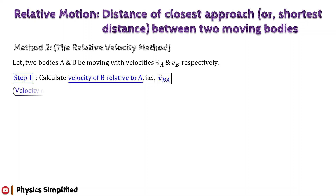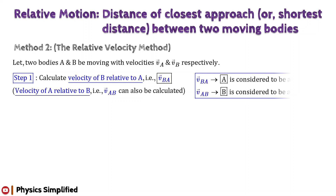Remember, you can also calculate the velocity of A relative to B, that is vector v_AB. It must be noted that vector v_BA means the velocity of B as seen by an observer situated on A, when the observer considers himself and A to be at rest. Similarly, for vector v_AB, it will be the velocity of A as seen by an observer situated on B, when the observer considers himself and B to be at rest.